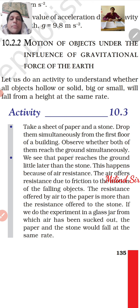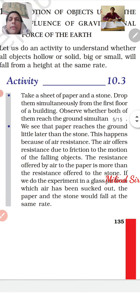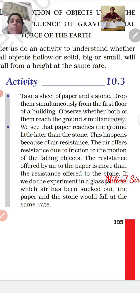We have an activity in which we will understand that if an object is hollow or solid, big or small, they will fall from a height at the same rate. Take a sheet of paper and a stone. Drop them simultaneously from the first floor.